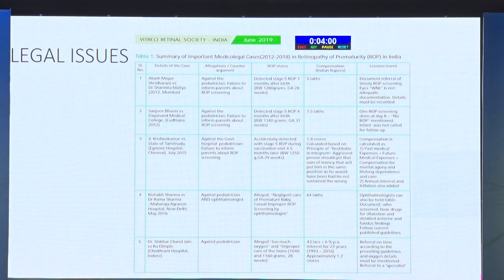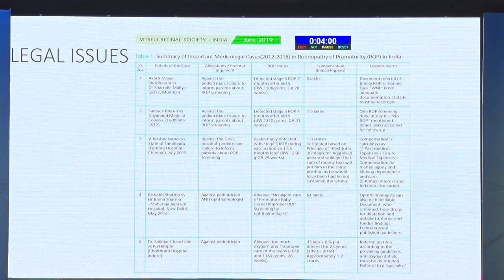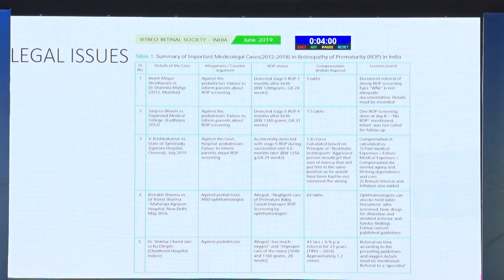It is not so difficult to do an indirect ophthalmoscopy in a newborn child - it is actually easier than in an adult because you can hold the child. The child is not uncooperative; you can just hold them and do the screening. At the very least, every resident should know how to screen and then refer to somebody more experienced based on their findings. Screening is a must to be taught to residents.